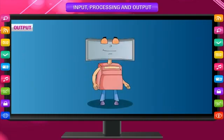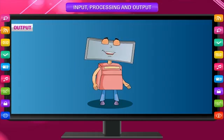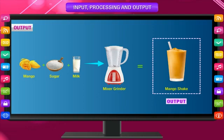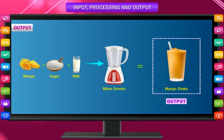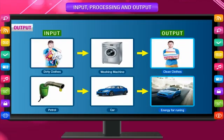Output: The things which we get from a machine after it works are known as output. In the above example, the mango shake given by the mixer grinder is the output. There are some more inputs and outputs.